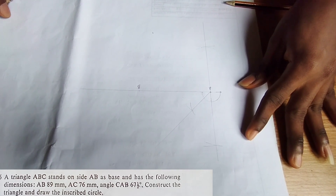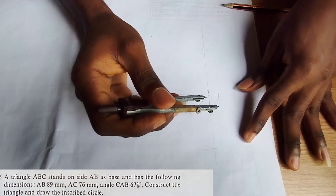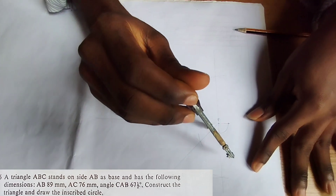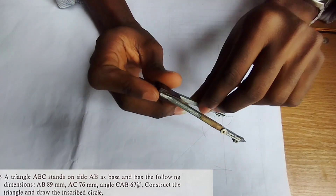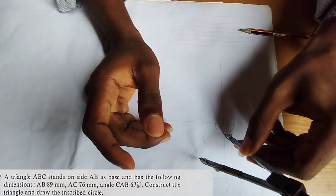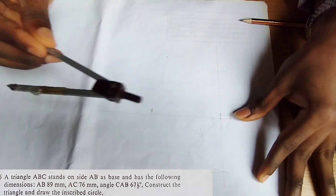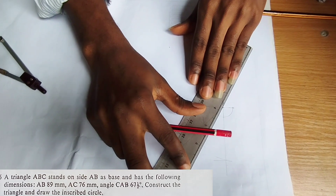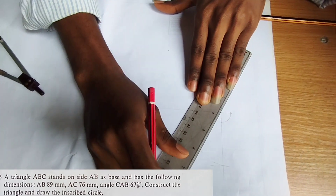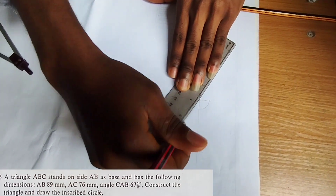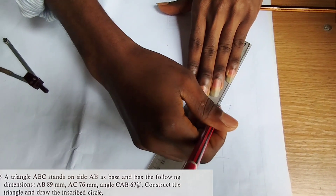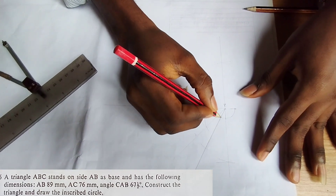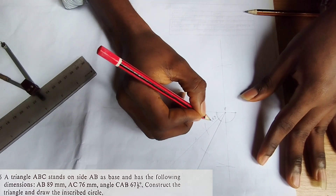You bisect your angle 45 again. Bisecting angle 45 gives us 22.5 degrees, and this point then represents the required angle of 67.5 degrees.